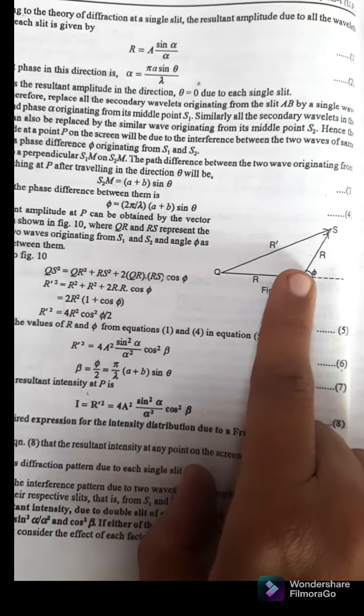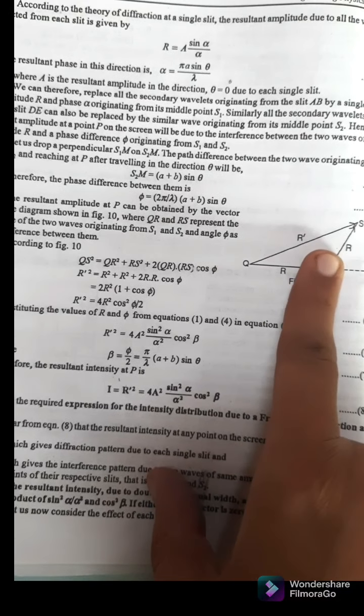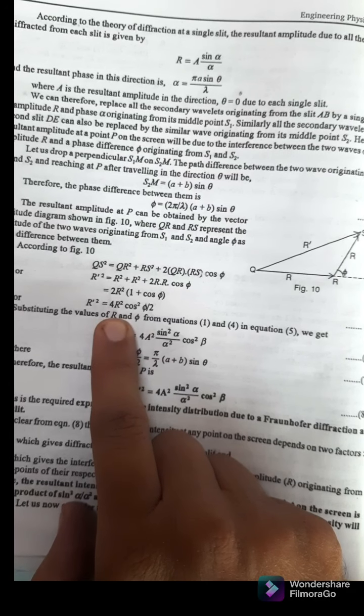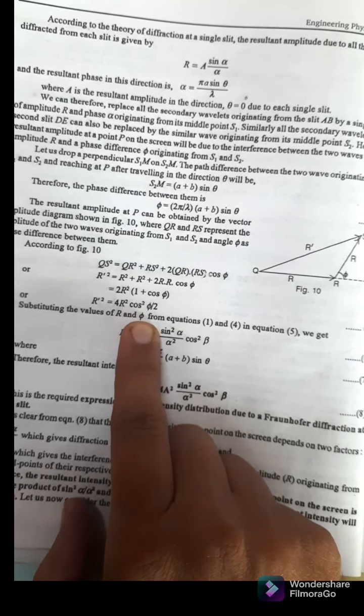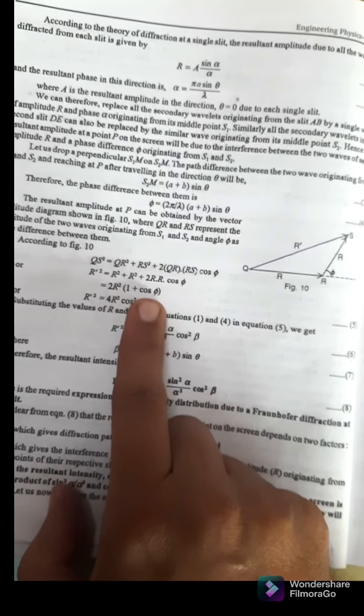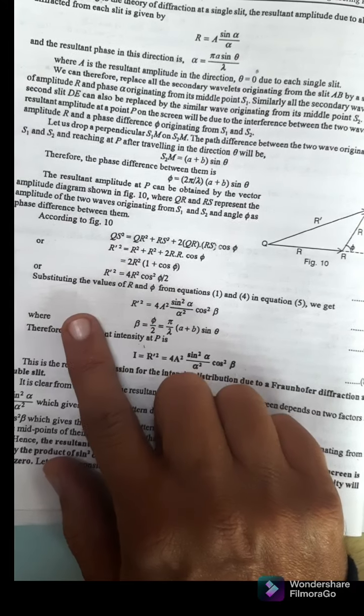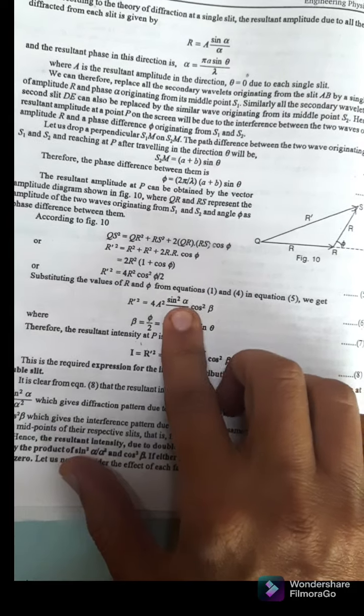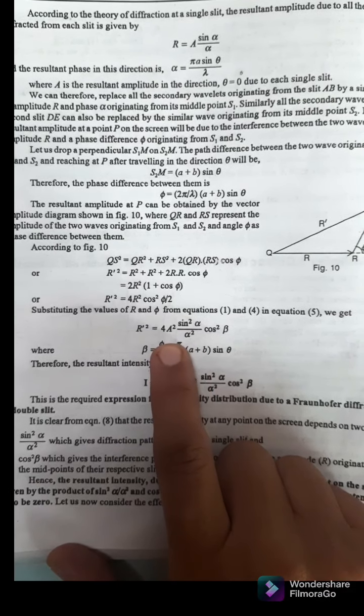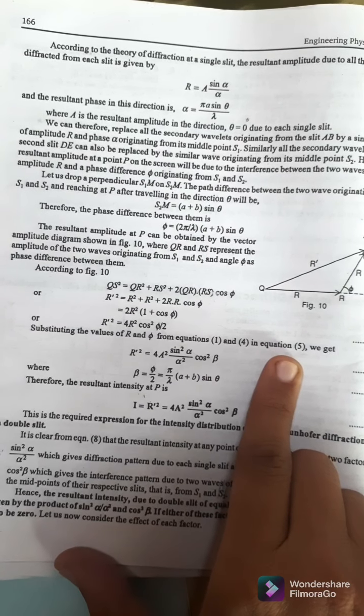Here R squared plus R squared plus 2 R squared cos phi is given. The angle theta and the phase difference between slit 1 and slit 2 gives the result: R squared equals 4 times R squared cos squared phi by 2. If we substitute the value of R from equation 1 and 4 into equation 5, then we get R prime.